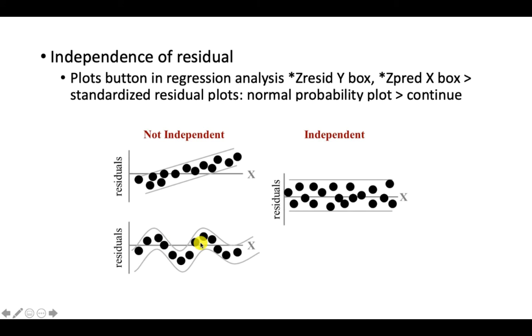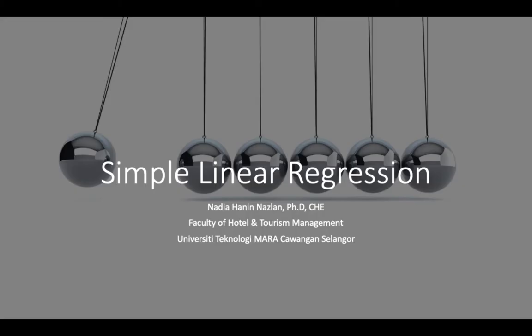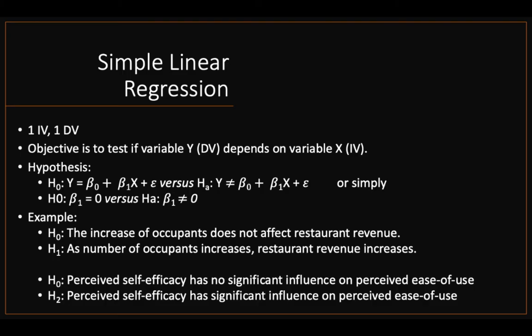When the assumptions for independence of residuals are not met, you cannot proceed. In simple linear regression, as mentioned, you have one IV and one DV. The objective is to test if variable Y depends on variable X — whether your dependent variable is dependent on your independent variable. This is how you write the hypothesis using the regression formula, or we would write it as stated here.